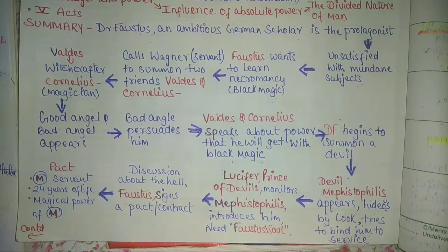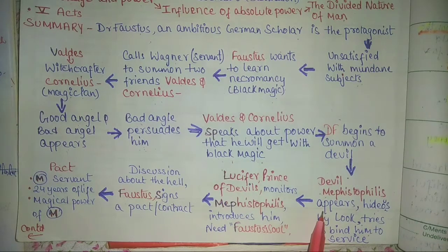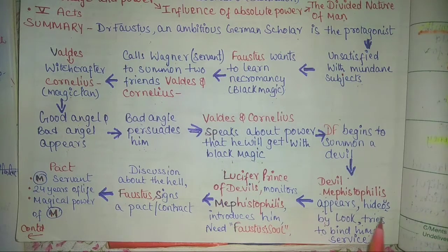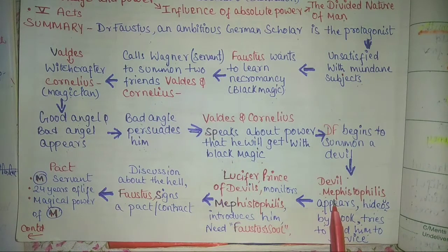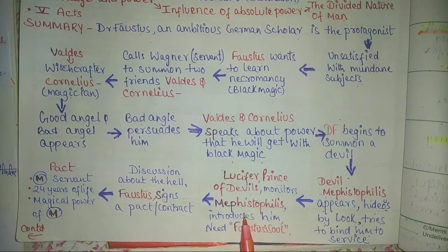But Mephistopheles says it is not because of Faustus' skill that he changed his appearance, but because of Lucifer's powers. Dr. Faustus tries to bind Mephistopheles to his service, but Mephistopheles totally denies, saying he requires permission from his devil master, Lucifer, who is also called the Prince of Devils and monitors all activities of Mephistopheles. Mephistopheles then introduces Faustus to Lucifer — who he is and what kind of power he has.